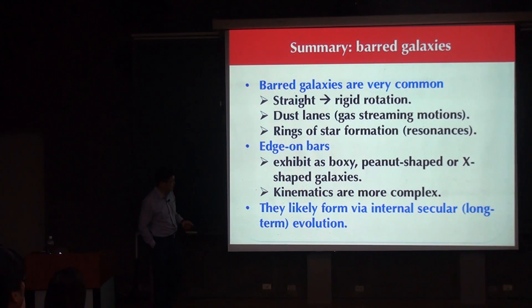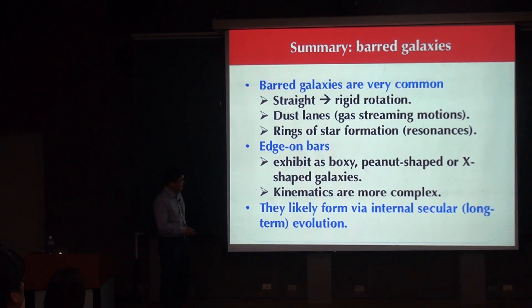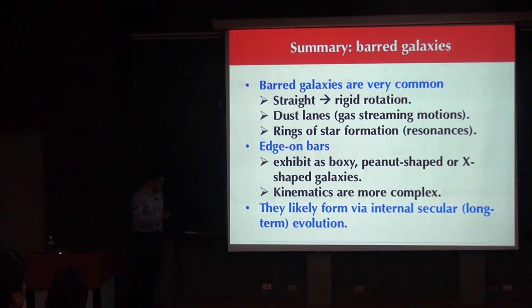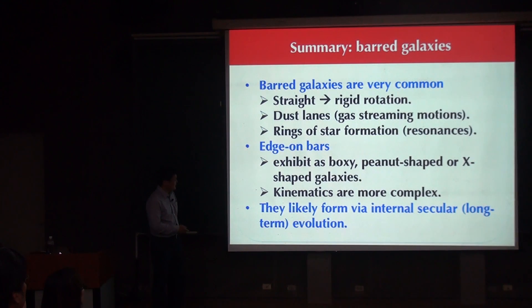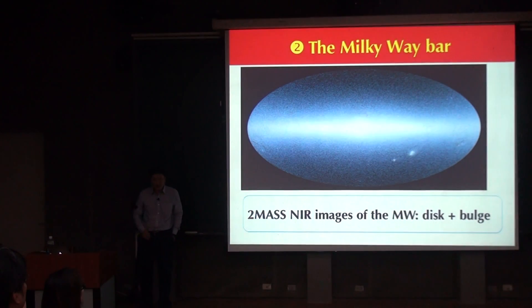Edge-on bar galaxies are quite complex in terms of kinematics, and they are likely to have formed through internal secular long-term dynamical evolution rather than encounters with other galaxies. This is the general introduction for bar galaxies. Now I want to specialize to the case of the Milky Way.